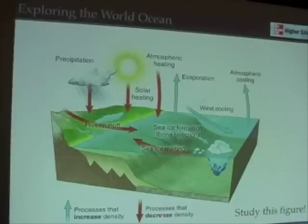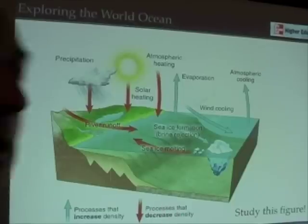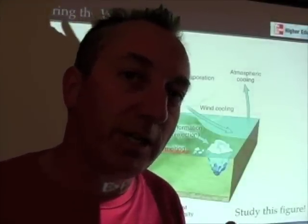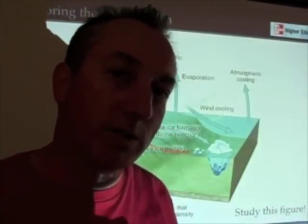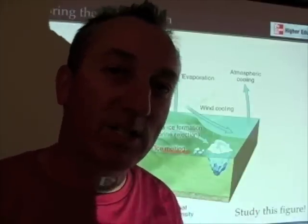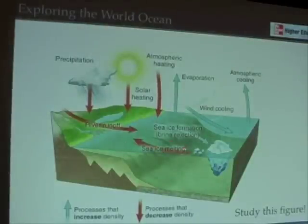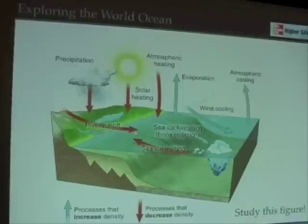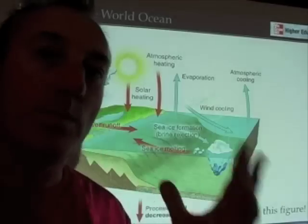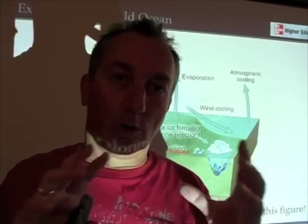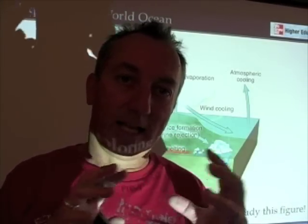Now let's look at processes that lower density. Aren't you amazed how long we can spend on a single figure? This is the kind of time you should be spending on these figures because you're going to be asked to explain this figure on the next exam. If we melt sea ice, we're adding fresh water, and fresh water makes the water less dense because we're lowering its salinity. If we add fresh water from rivers, or if we add rain to the surface of the ocean — adding fresh water, lowering the salinity, less salinity, less density.